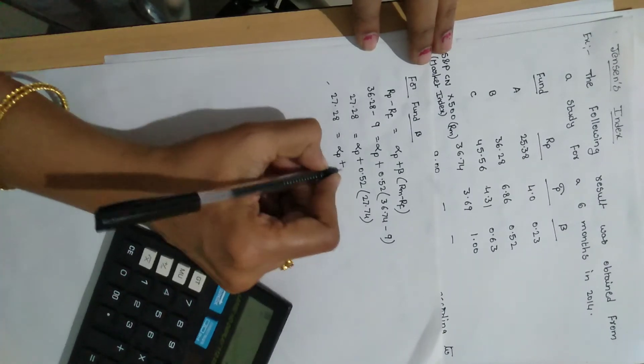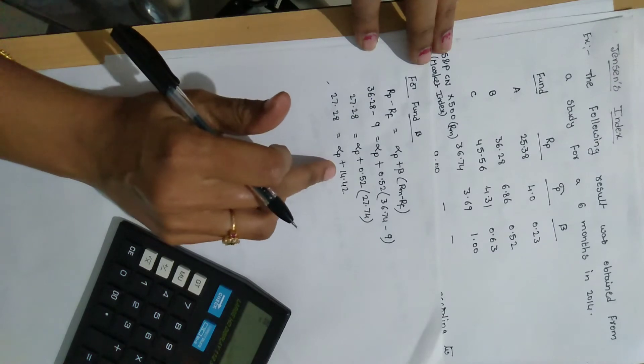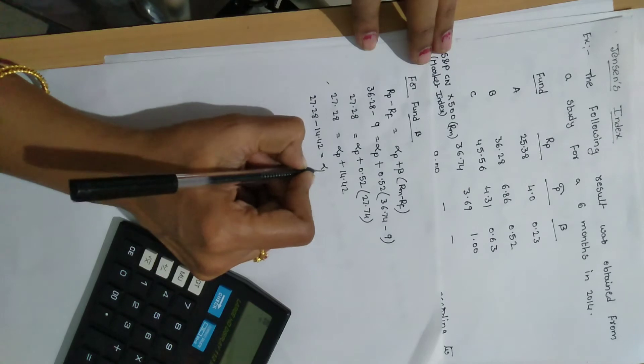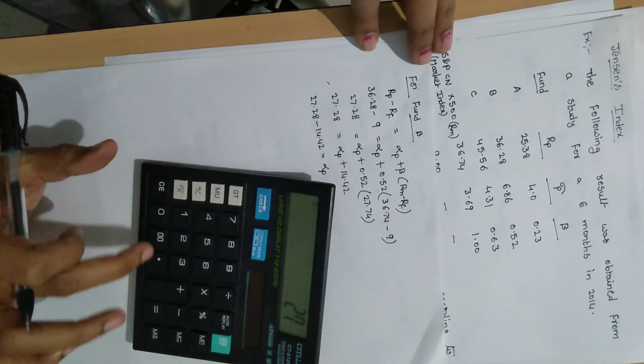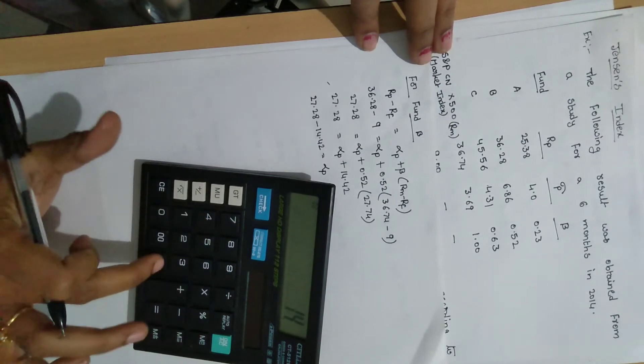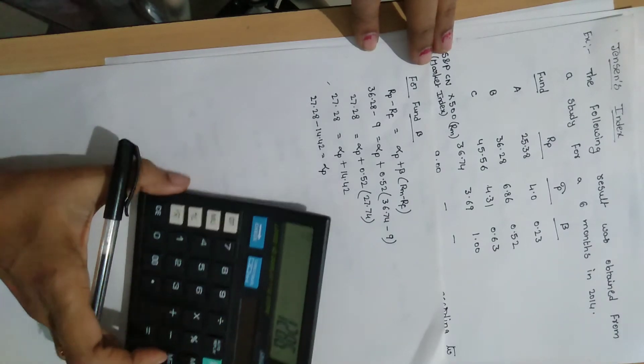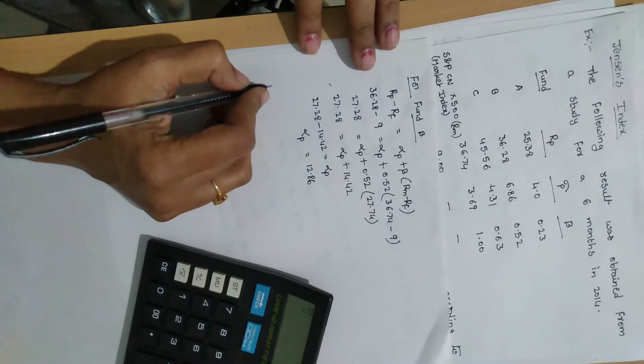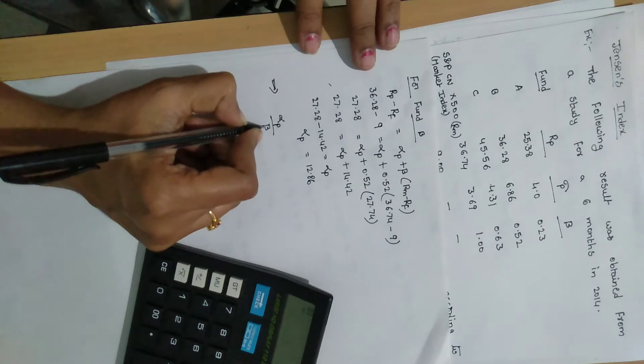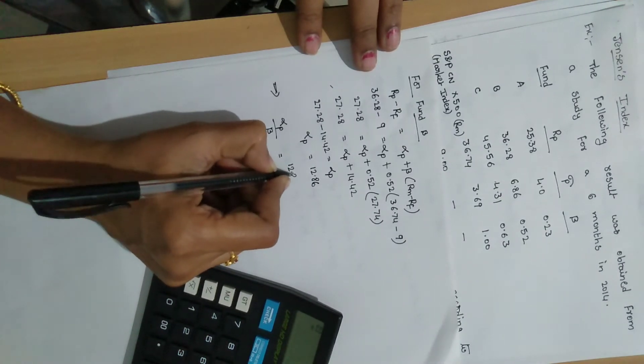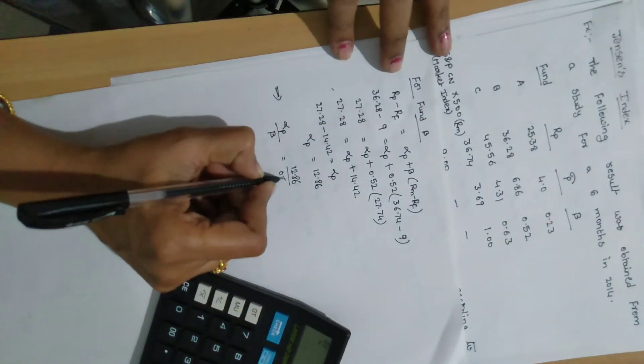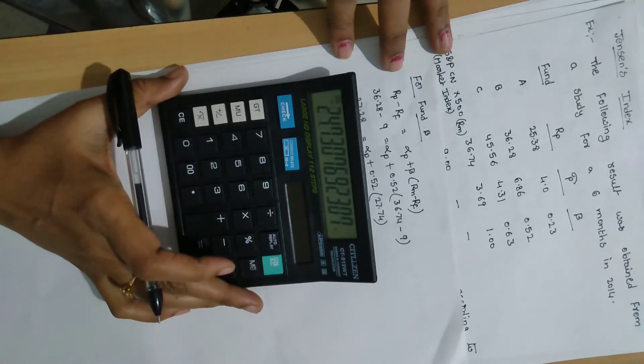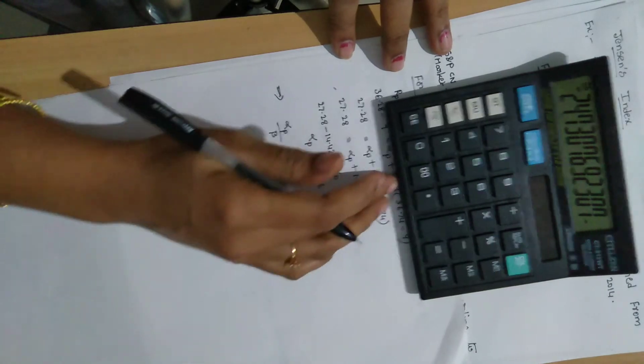Then 27.28 equal to alpha P plus 0.52 into 27.74. 0.52 into 27.74 equal to 14.42. Then 27.28 minus 14.42 equal to alpha P. Then alpha P equal to 12.86. For ranking we use the formula alpha P by beta value. Here alpha P is 12.86 by beta value 0.52. 12.86 divided by 0.52 equal to 24.73.